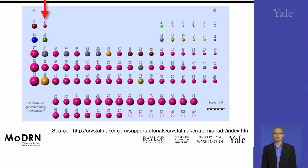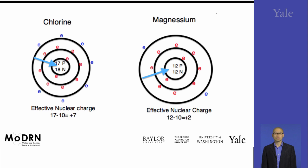If you go from top to bottom, the atomic radii are increasing. To understand this phenomenon, we have to go back to the electronic configuration of atoms. On this slide, we show two atoms.